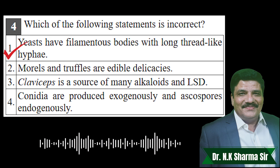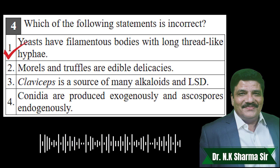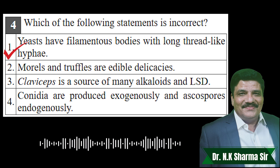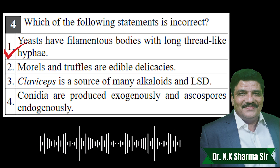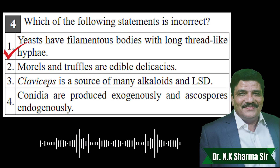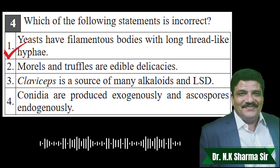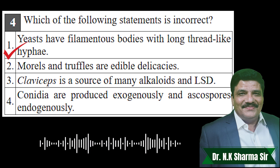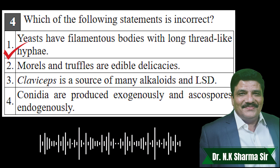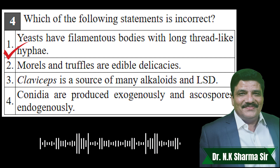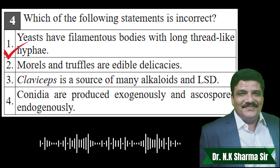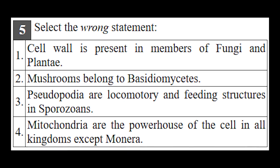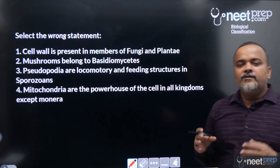These are unicellular fungi — probably the only unicellular fungi. Now the question is: if they are unicellular eukaryotes, why are they not in Protista? The reason is that their mode of reproduction is similar to Ascomycetes, therefore they have been kept under Ascomycetes. Option one is the correct answer.